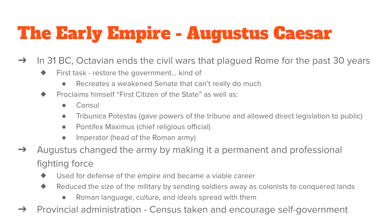Octavian Caesar was the adopted son of Julius Caesar. When his father was killed, Octavian made it his goal to seek revenge. From 44 BC until 31 BC there was a huge civil war. Octavian ended the civil war and restored the government, though the Senate he recreated was fairly weak. Octavian was definitely in charge, and he proclaimed himself first citizen of the state.